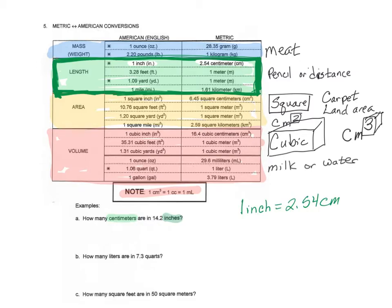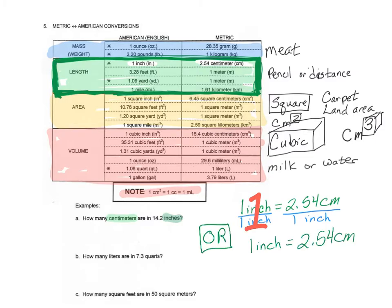We want to use that as a ratio. We can write one inch equals 2.54 centimeters and divide both sides by one inch, giving us 2.54 centimeters per one inch equals one — so we can use that as a conversion factor. Or we can divide both sides by 2.54 centimeters, giving us the other ratio: one inch over 2.54 centimeters equals one. Both are valid conversion factors.